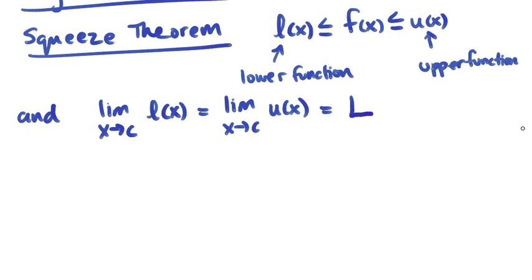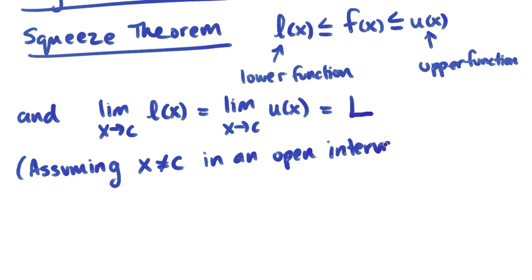It's much easier to understand this graphically. We need to have one more condition before we do that, which is an assumption. We are assuming that x isn't c in an open interval that contains c.